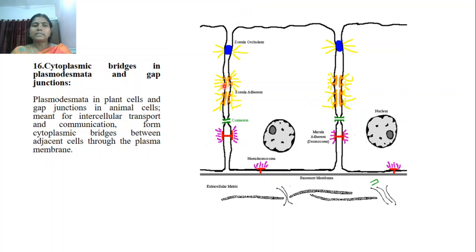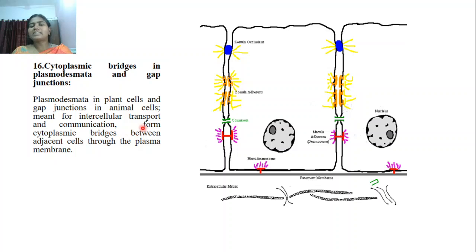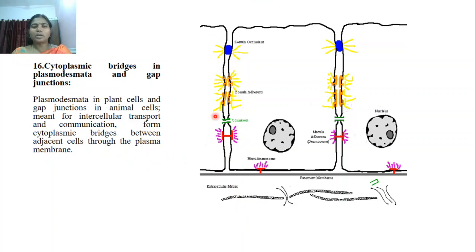The plasma membrane also does the function of communication between cells, done by cytoplasmic bridges — plasmodesmata or gap junctions that exist between cells. Plasmodesmata in plant cells and gap junctions in animal cells are meant for intercellular transport. These junctions allow adjacent cells to communicate with each other, which is also an extended work of the plasma membrane.